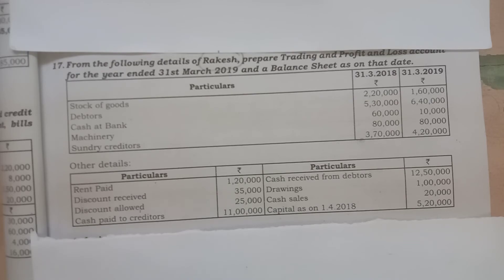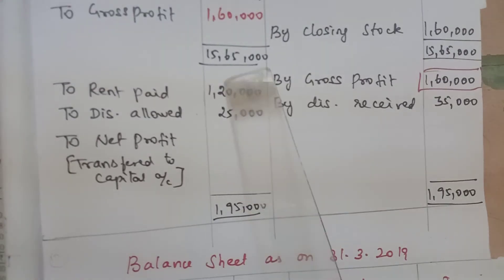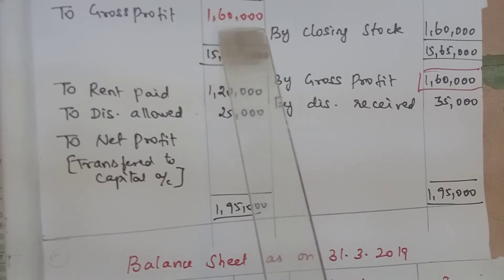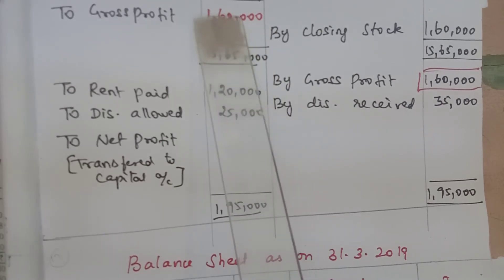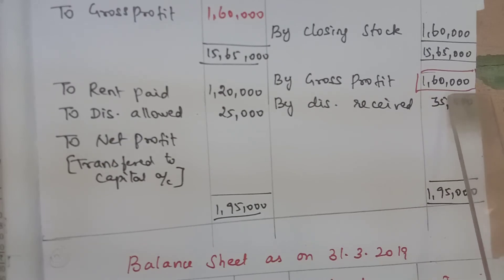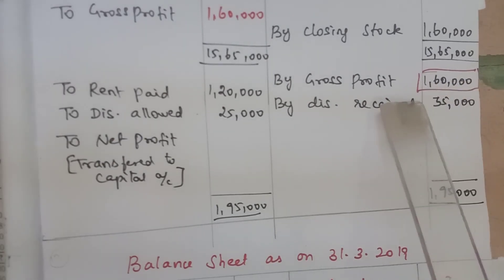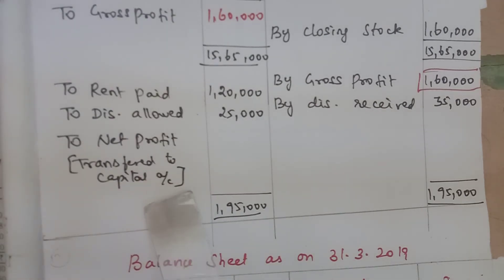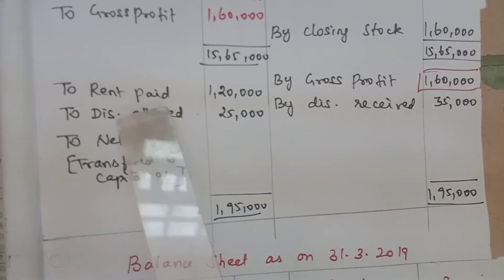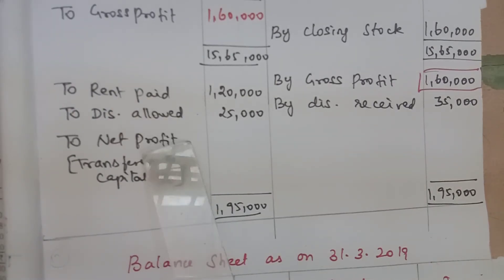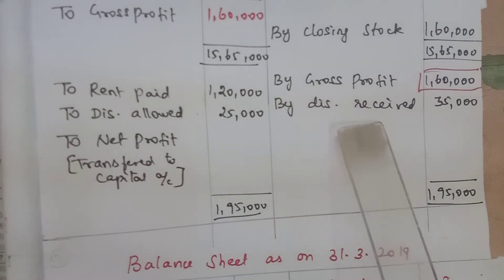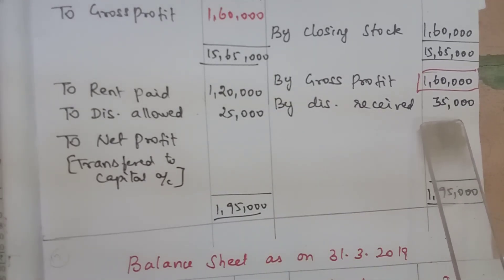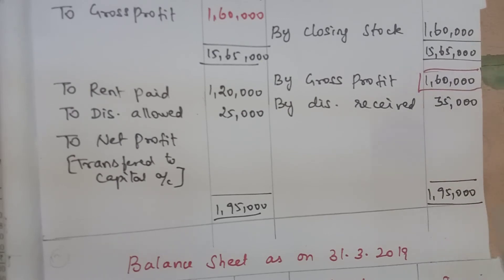This is the P&L account. Gross profit is $1,60,000 - this comes from the trading account into the P&L account. In the profit and loss account, expenses are nominal accounts. Paid expenses and allowed expenses: rent paid and discount allowed are on the debit side. Discount received income is on the credit side. The balancing figure is net profit.